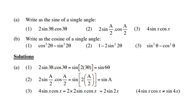For 4 sin x cos x, this is the same as 2 times (2 sin x cos x), so therefore it equals 2 sin 2x.